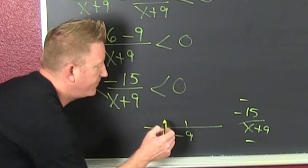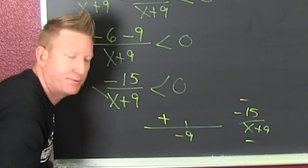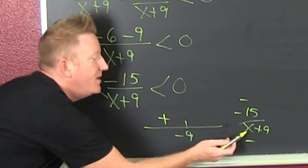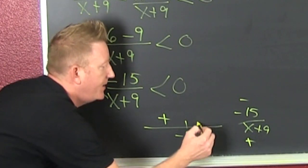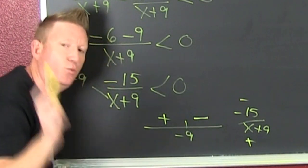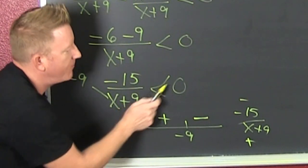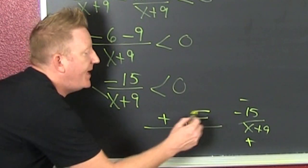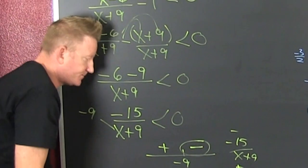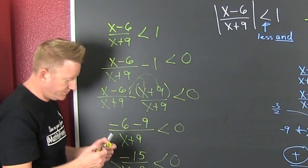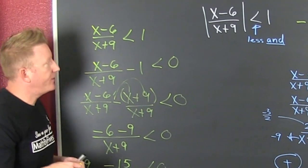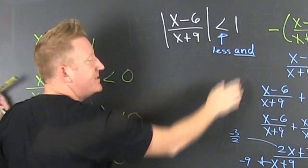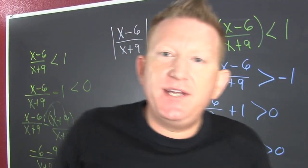To the left of negative 9 — say negative 10 — that's negative 15 divided by negative 10 plus 9, which is negative 1, giving positive. So the left side is positive. To the right of negative 9 — say zero — the denominator is positive 9, and negative divided by positive is negative. We want where this is smaller than zero, which is to the right of negative 9.